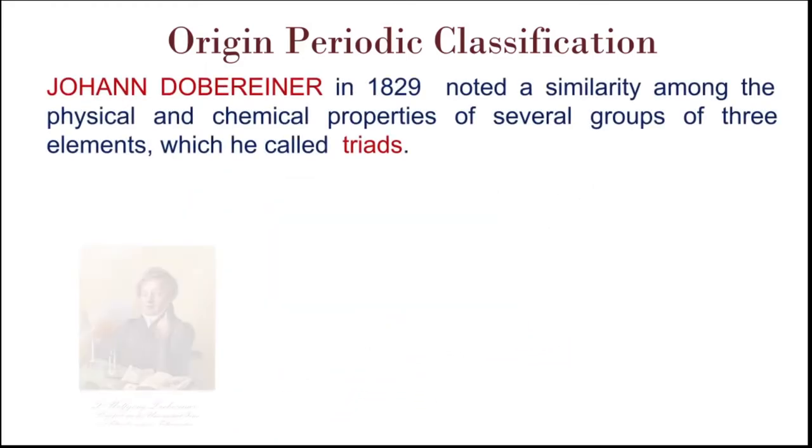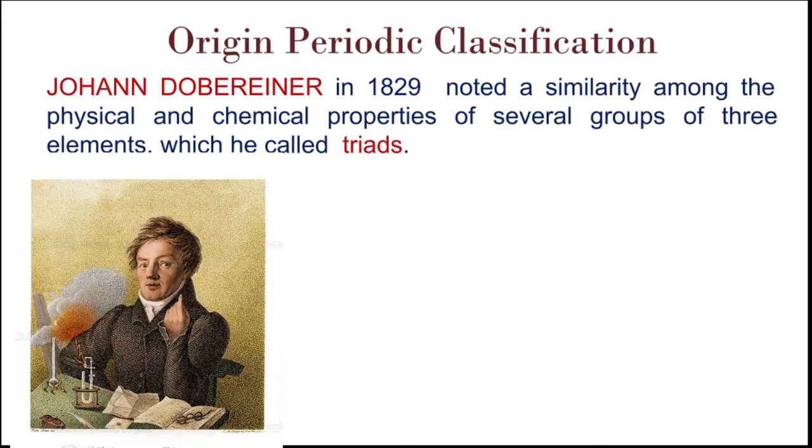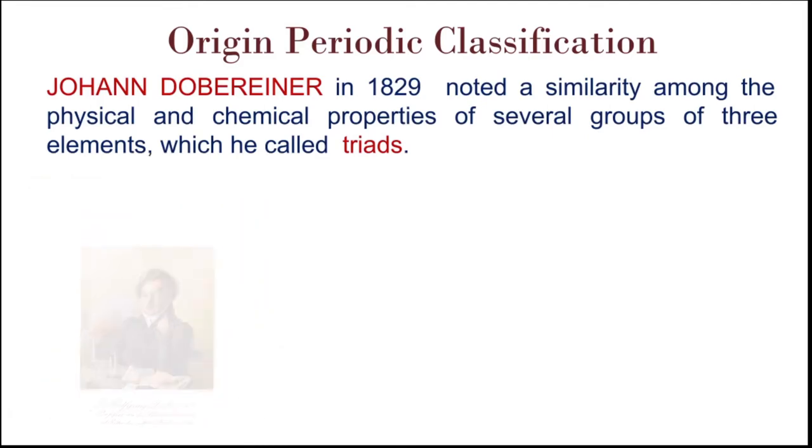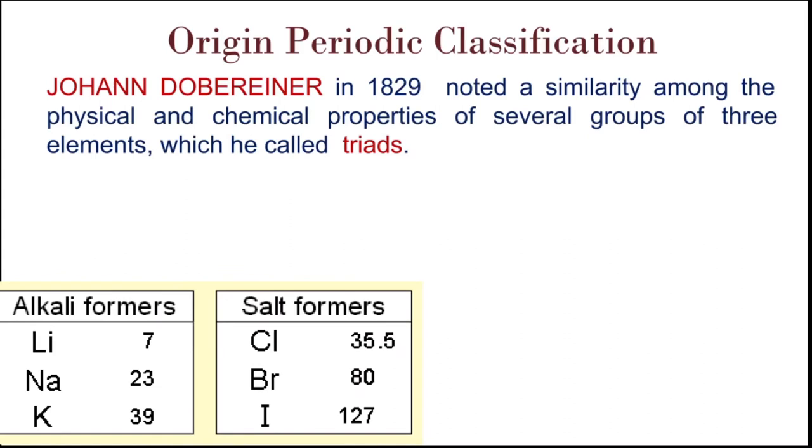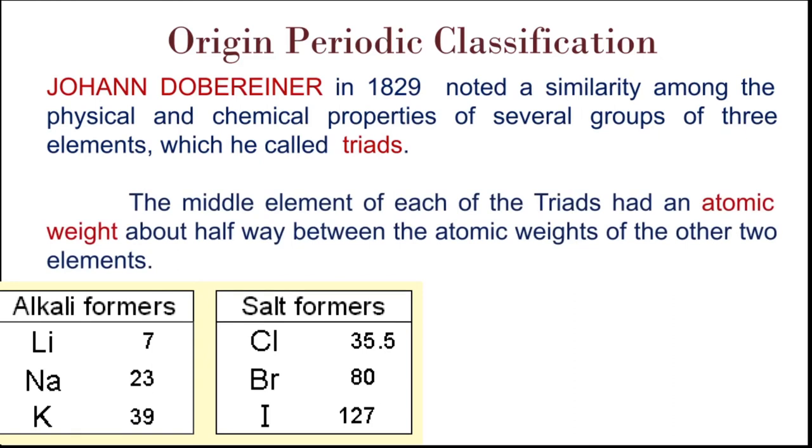First, we have Johann Dobereiner. In 1829, he noted a similarity among the physical and chemical properties of several groups of three elements, which he called triads. As you have studied in 10th standard, a triad consists of three elements. The middle element of each triad had the atomic weight about halfway between the atomic weights of the other elements.